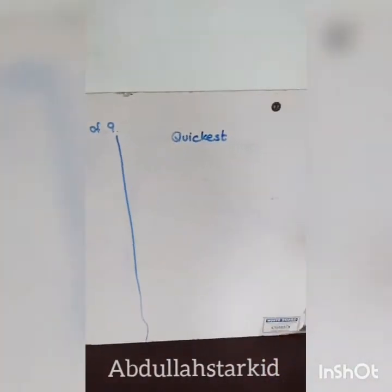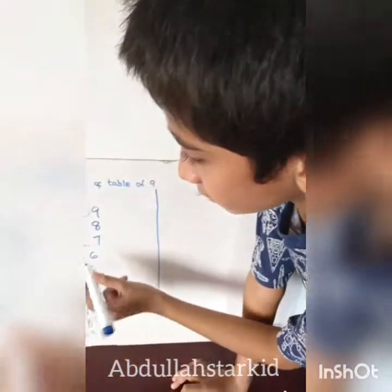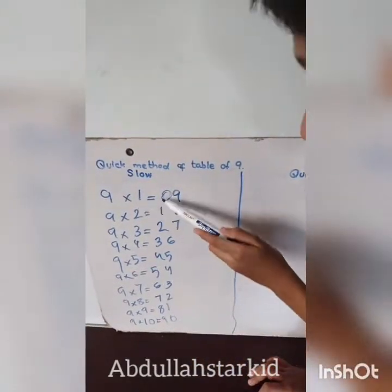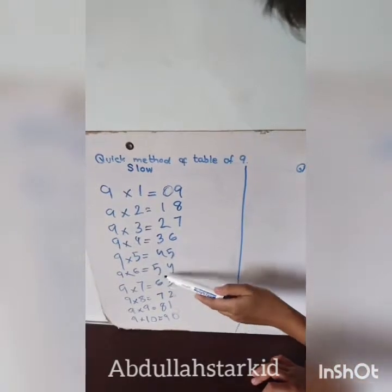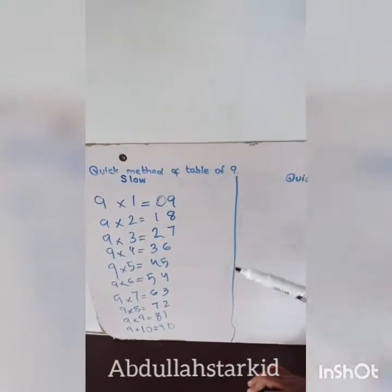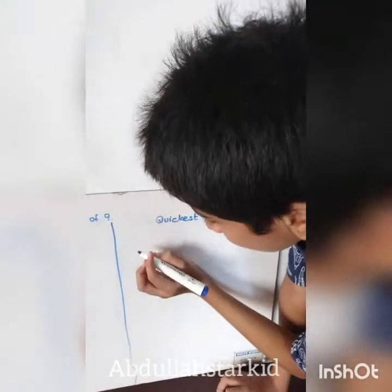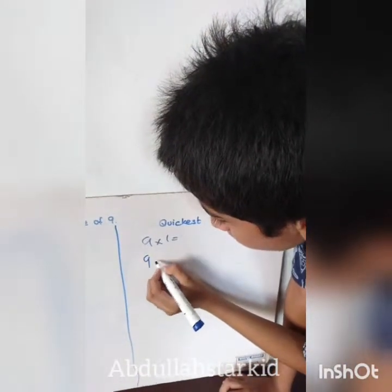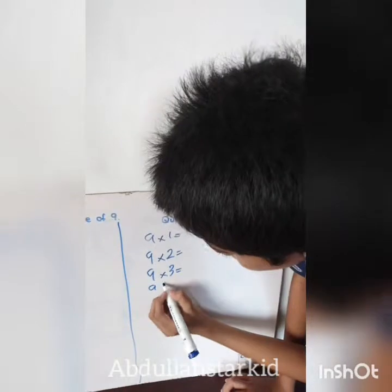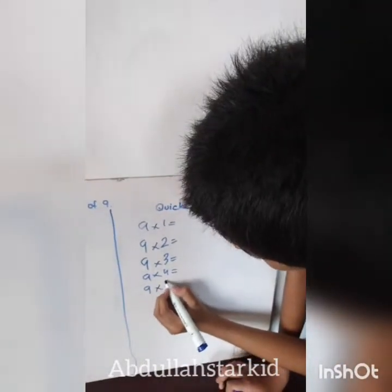Before we get to the quickest method, I'll show you how it works. The pattern starts from zero to nine: zero, one, two, three, four, five, six, seven, eight, nine. Then a second column also goes from zero to nine in the same way. This is the quickest method to do the nine times table — most other tables like ten and eleven don't follow this zero-to-nine counting pattern.